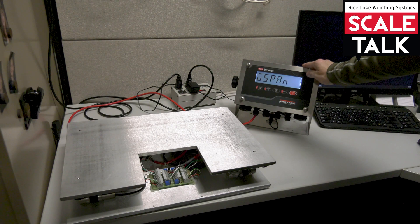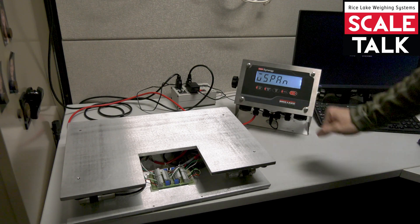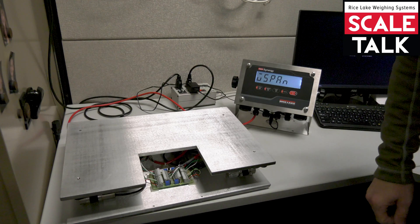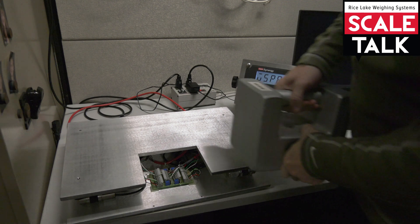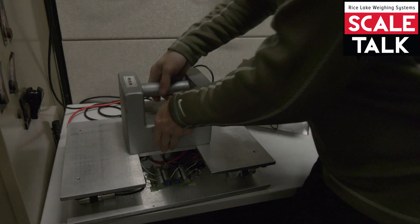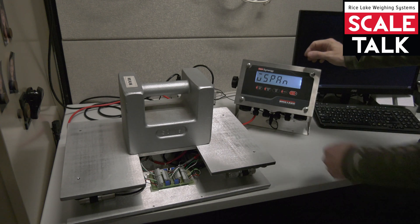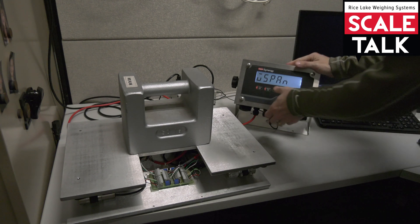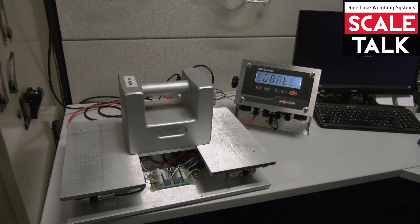So the indicator is now looking for 50 pounds to be on the scale when we execute the span. So let's go ahead and put a 50 pound test weight on the scale. Once that's in place and settled, I'm going to go ahead and press my down arrow. Execute that span calibration.